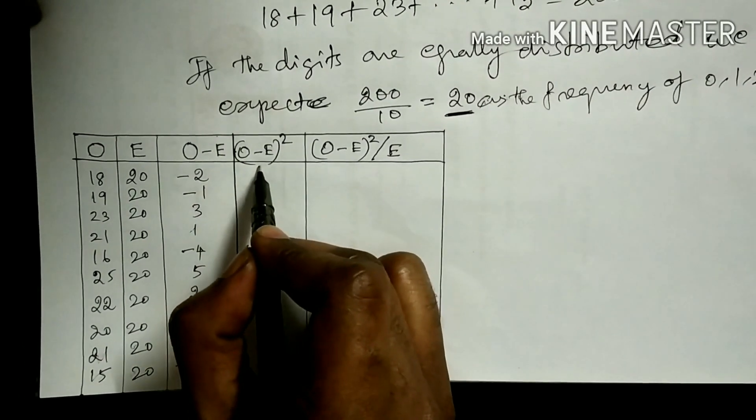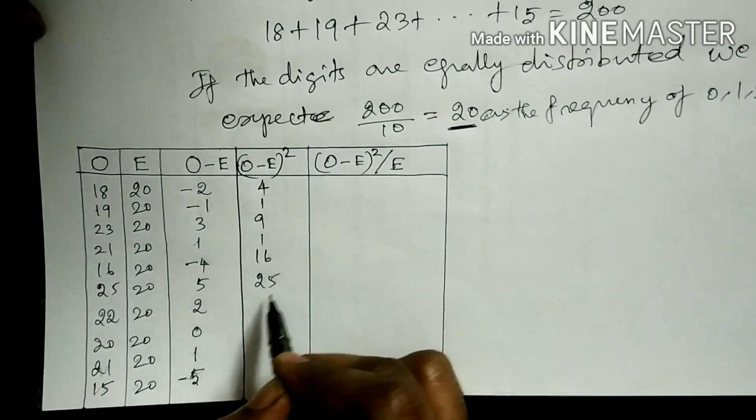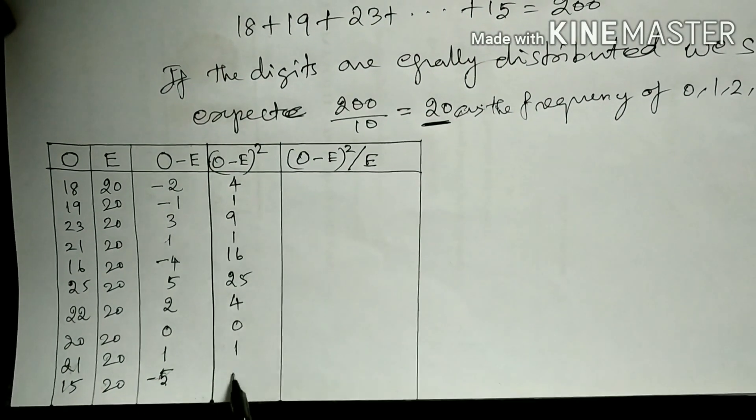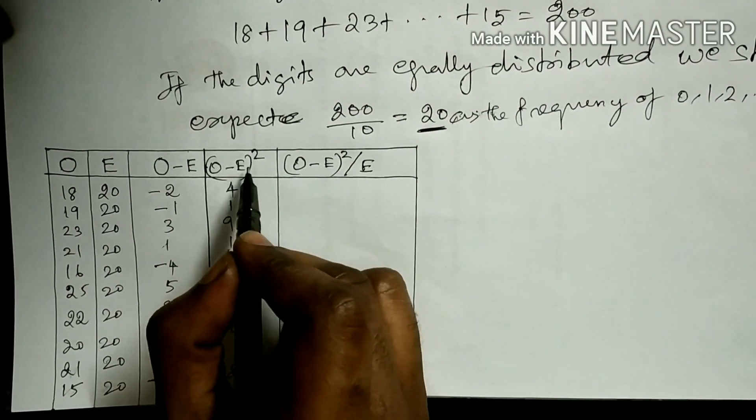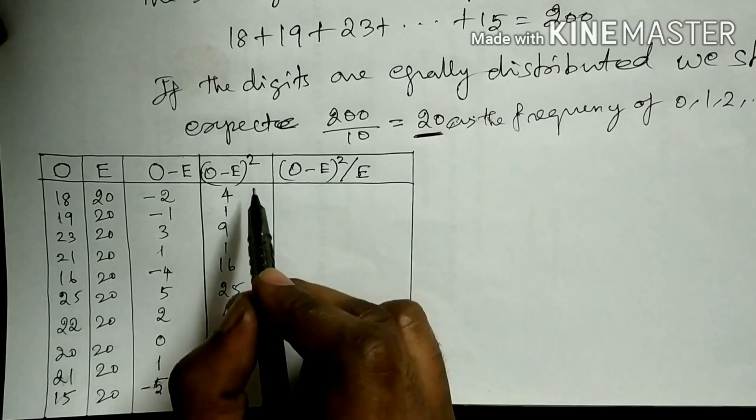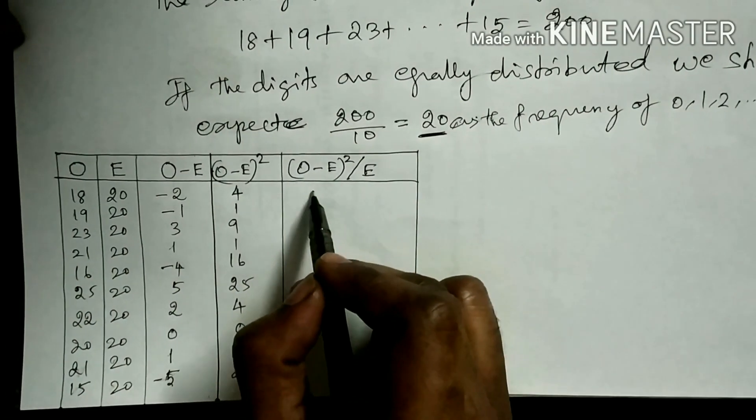Just square them now. 4, 1... this is observed minus expected O square. Now divide this value by E expected frequency value.